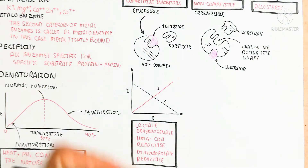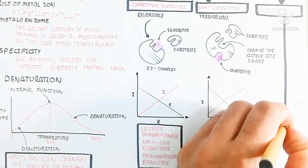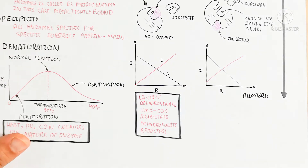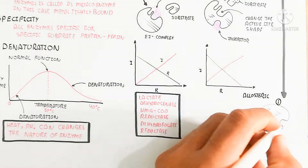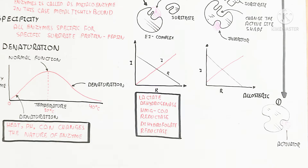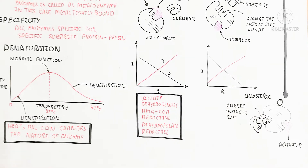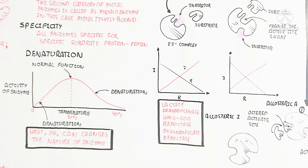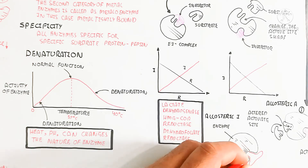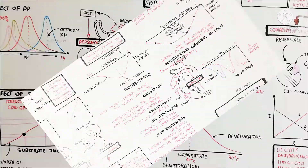An irreversible non-competitive inhibitor binds to a site other than the active site, changing the active site shape so the substrate cannot bind, thereby reducing the reaction rate. In allosteric inhibition, an activator or inhibitor binds to an allosteric site, altering the shape of the active site. When an inhibitor binds to form an enzyme-inhibitor complex, the active site can no longer pick up substrate, causing inhibition.